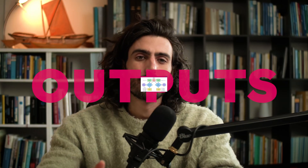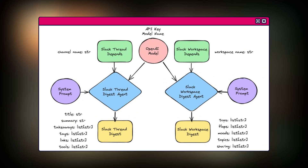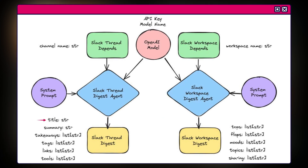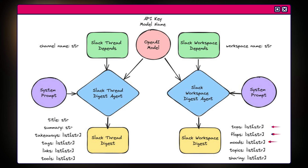And outputs: we get two main outputs. The Slack thread digest is a summary of the Slack thread, including title, summary, takeaway, tags, links, and tools mentioned. On the other side, we've got the Slack workspace digest — a broader analysis of the workspace highlighting top topics, flops, moods, overall topics, and different trends.